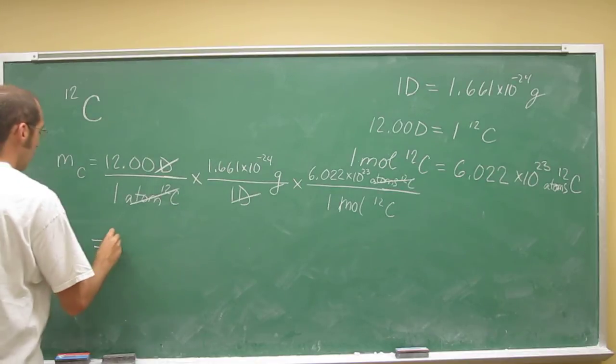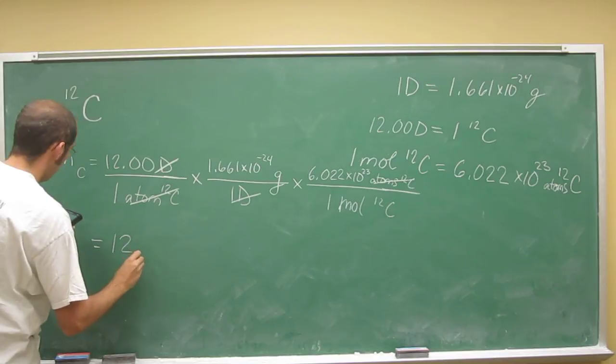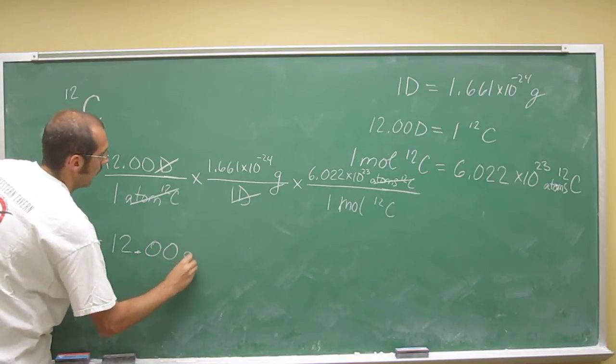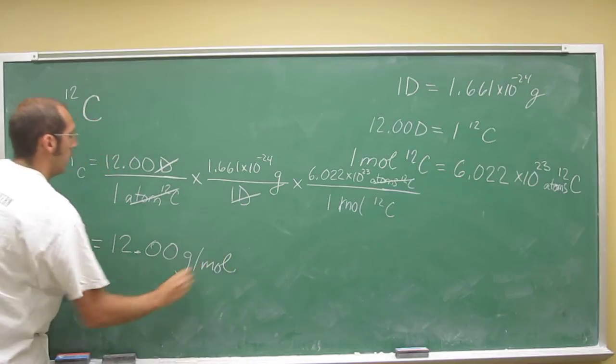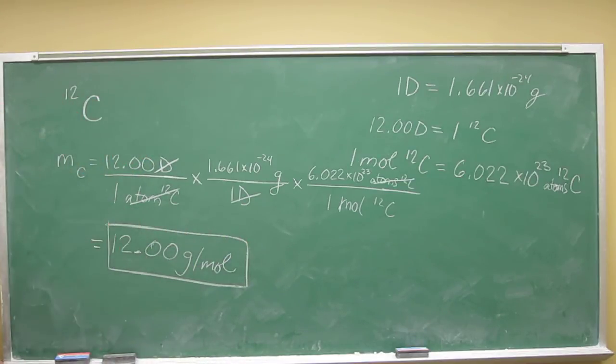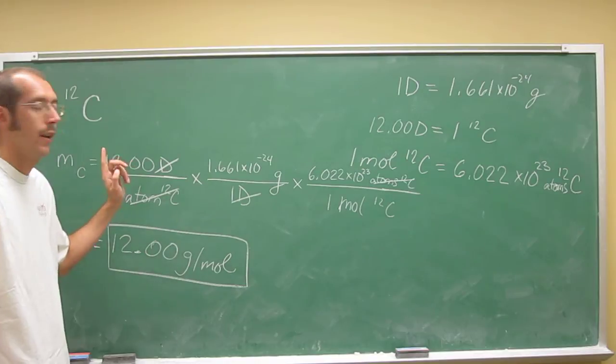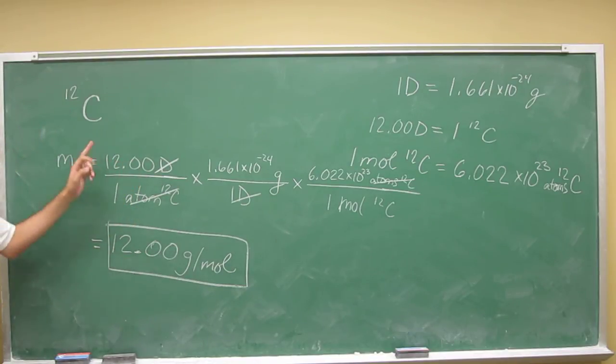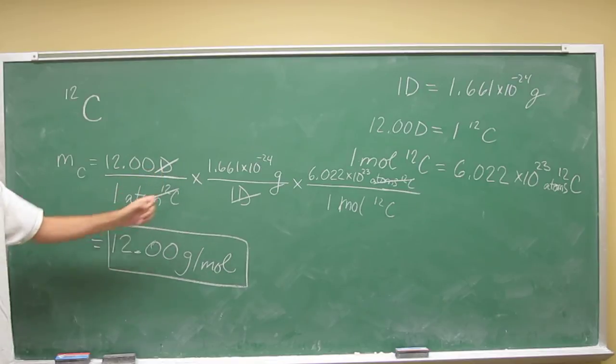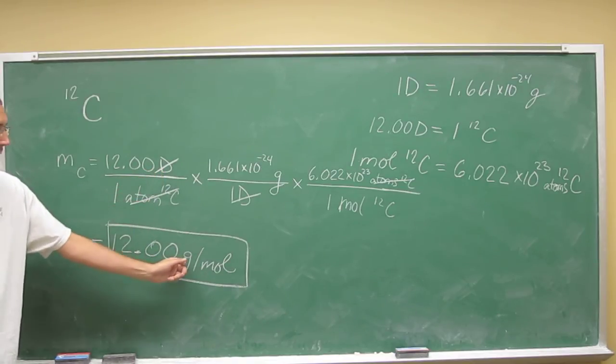And notice, we go to four significant figures. Hopefully you guys see something interesting, right? So one mole of carbon-12. This is the cool thing about Avogadro's number: one mole of anything weighs the same mass in grams per mole as one atom or one molecule did in Daltons. So 12 Daltons per atom of carbon-12 is 12 grams per mole.